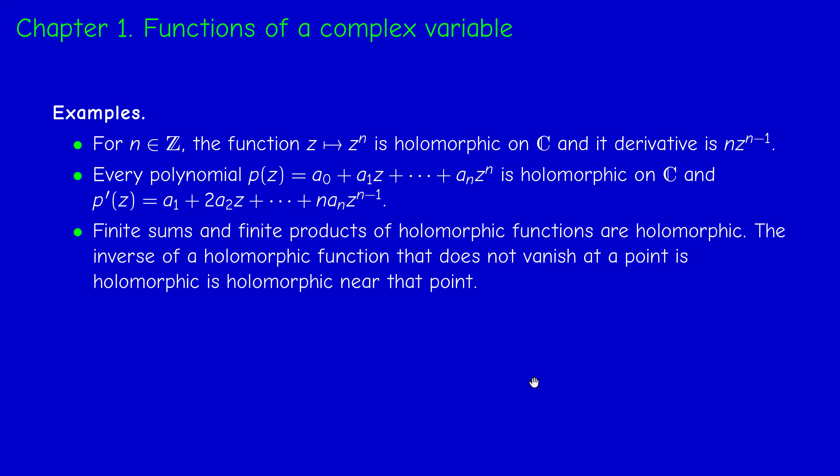The sum and product of two holomorphic functions are holomorphic. The inverse of a holomorphic function is holomorphic provided the function doesn't vanish — if it doesn't vanish at a point, it doesn't vanish on a neighborhood of that point by continuity. Note: holomorphic implies continuous because differentiability implies continuity, though holomorphic is much stronger than continuity. The composition of two holomorphic functions is holomorphic — exactly the same rules as real calculus.